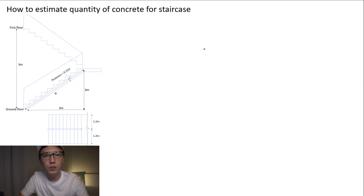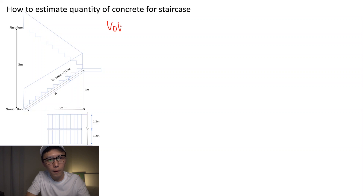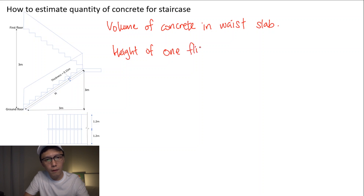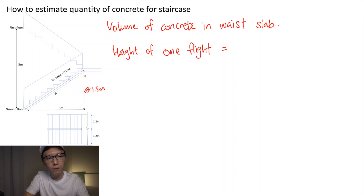The first thing we need to do is identify the volume of concrete in the waist slab. To do that, we first need to identify the height of one flight, which is 3 meters divided by 2, giving us 1.5 meters. So the height for one flight is 1.5 meters.